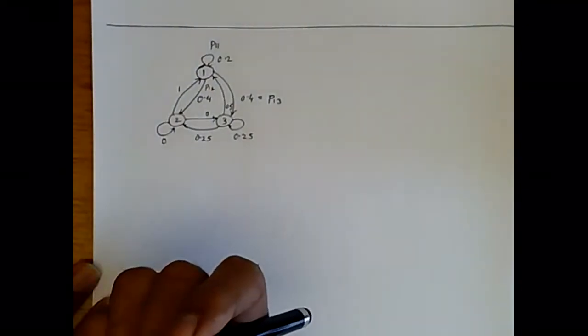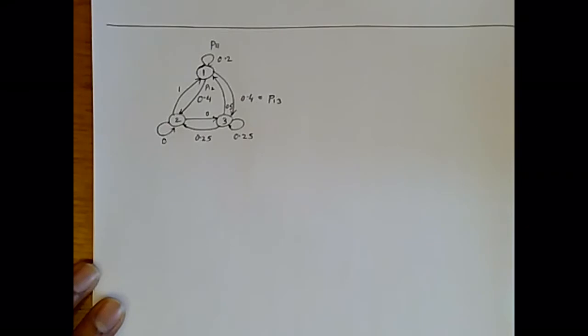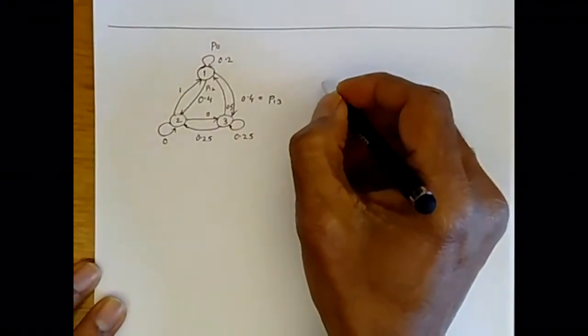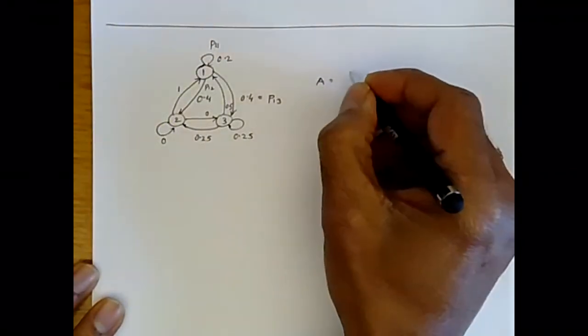When you label it in this way, it should remind you of the elements of a matrix. And sure enough, we can write down the matrix like this. We call this the transition matrix A, and it's going to look like this.